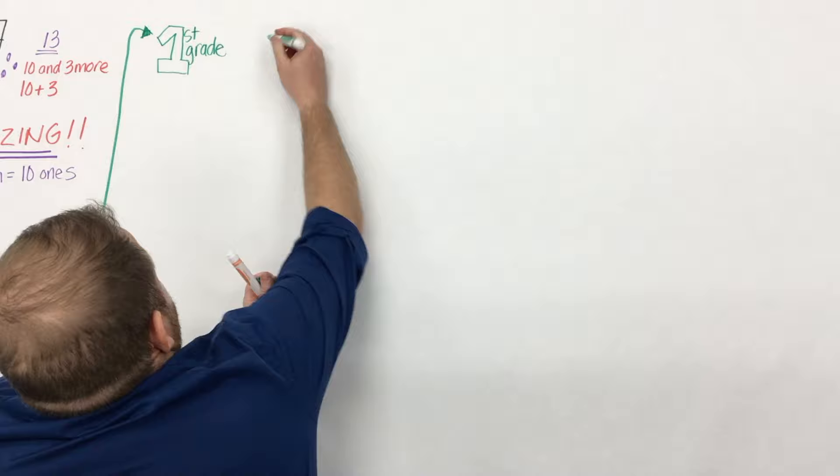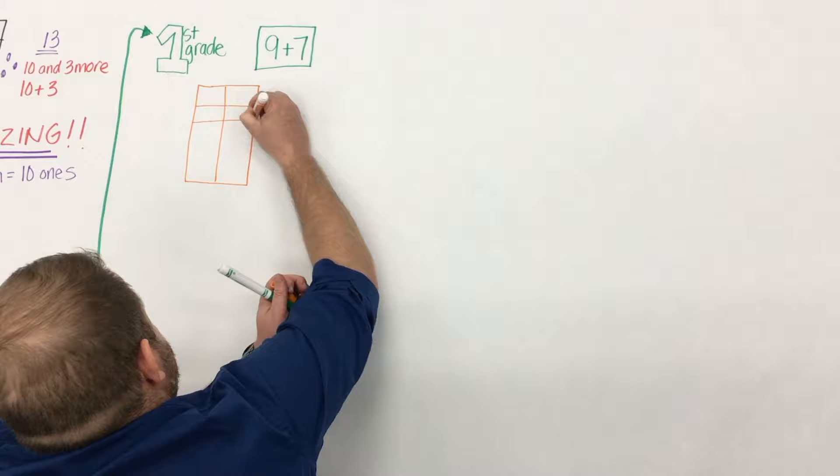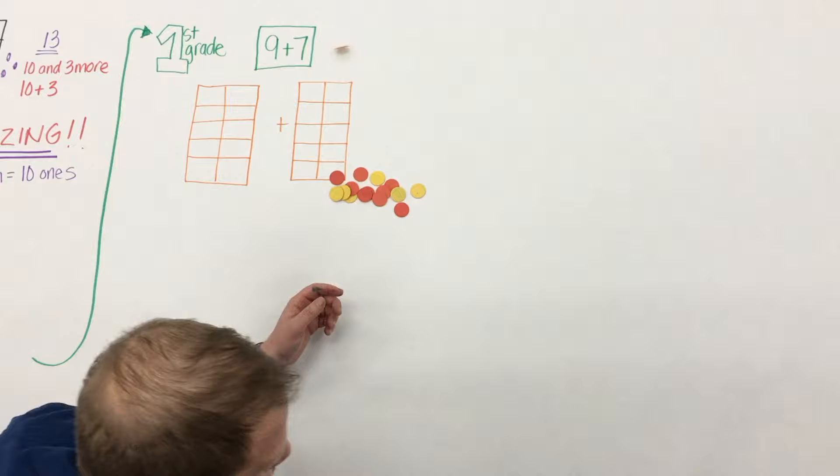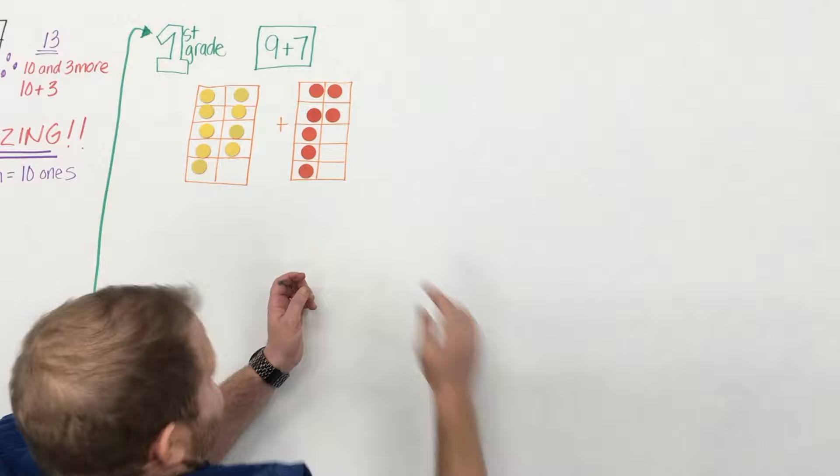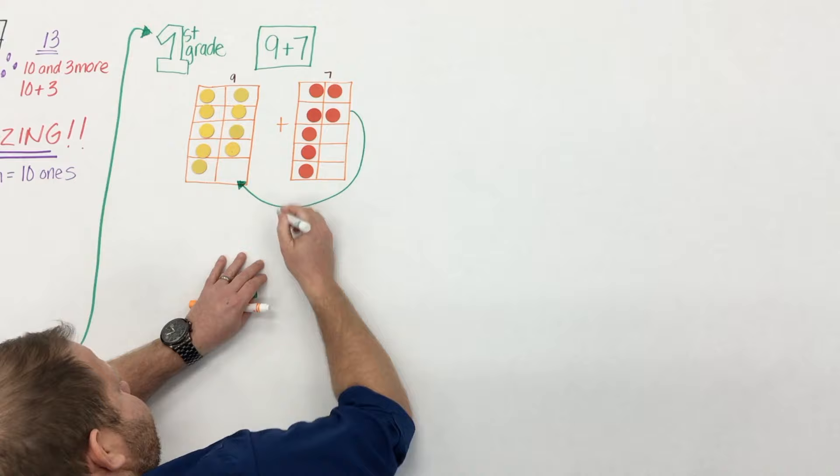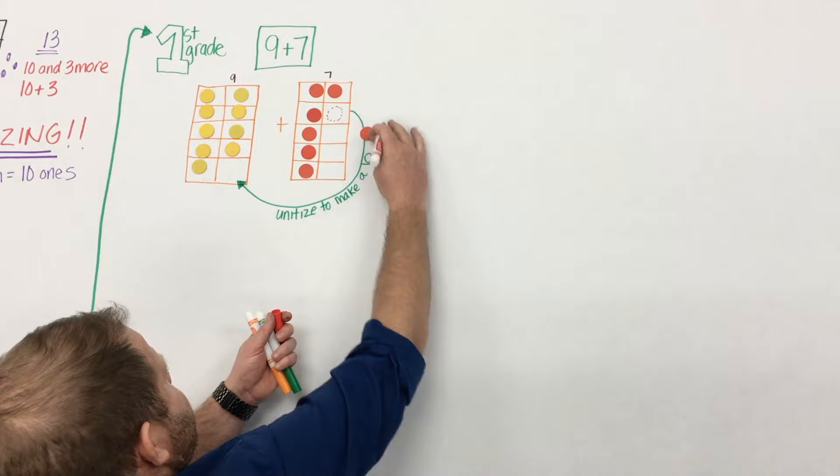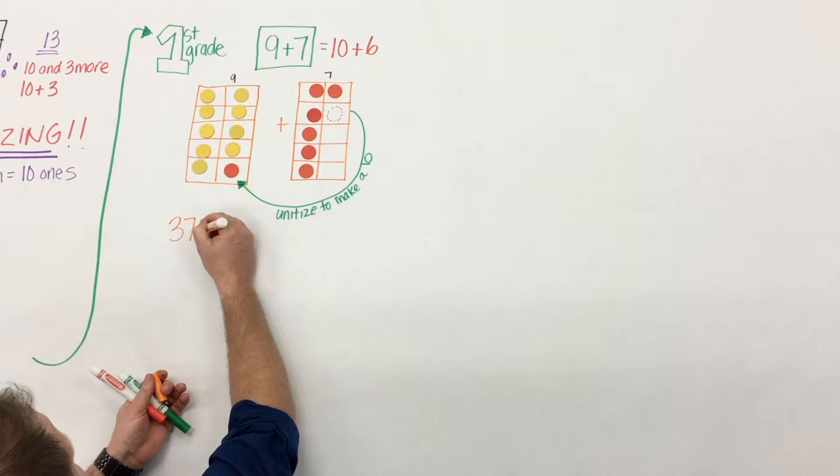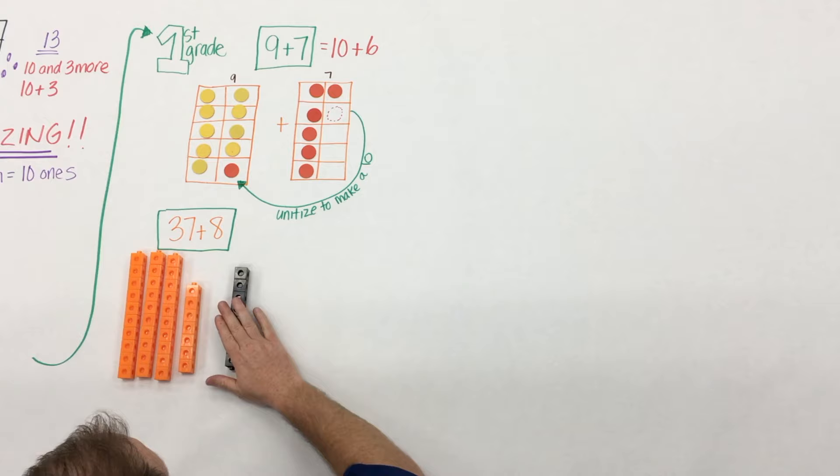As students dive into first grade they begin to explore sums greater than ten. So what might that look like? Well here a student can take nine plus seven model it with a ten frame and because they've worked on this idea of unitizing or they're beginning to they know that it's most efficient to fill up a ten frame. So they take one from the seven give it to the nine to make a ten and they're left with six. Here students are beginning to think flexibly about numbers and the same understanding applies to double digit numbers.